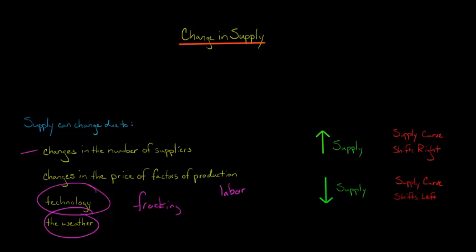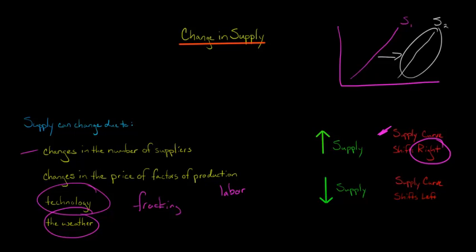When we say that we have an increase in supply, what we mean is that the supply curve is going to shift to the right. Let's say that we have our standard upward sloping supply curve, I'll call that S1, and then something happens that increases the supply. What that means is that we're going to have a shift. The curve is going to shift to the right, and we're going to have an entirely new supply curve.